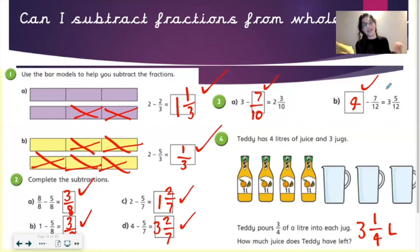Then question number four. A worded question. Teddy has 4 litres of juice and 3 jugs. Teddy pours 3 quarters of a litre into each jug. How much juice does Teddy have left? Teddy would have 3 and a quarter litres left. Do not forget your unit of measurement. If you just write 3 and a quarter, I don't know what you're talking about, but if you put the litre, then I know exactly what you mean and you're talking about the orange juice.